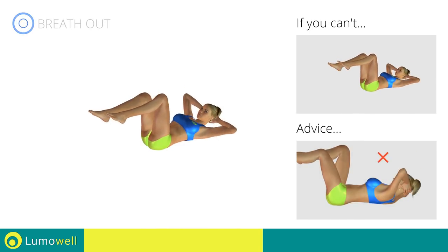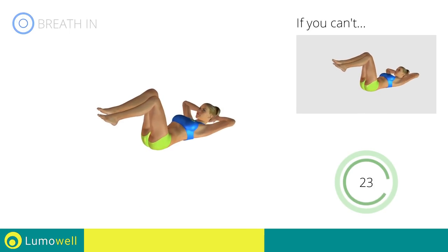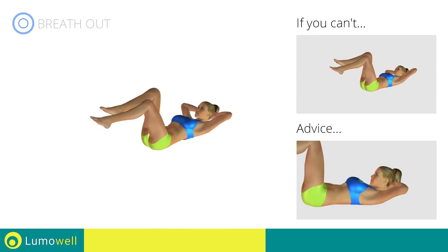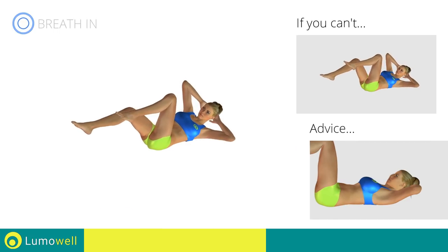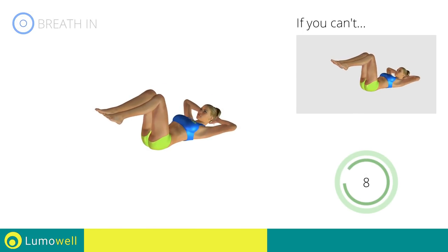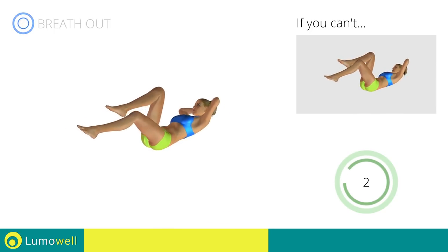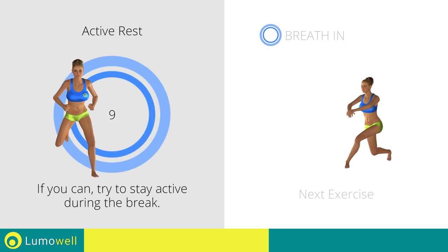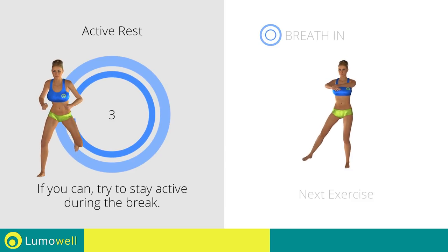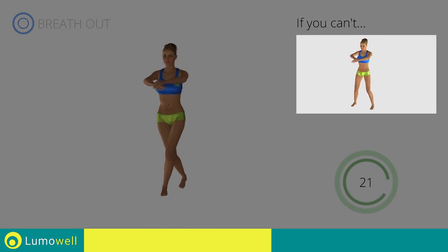Be sure not to lift your lower back off the floor — keep the abs constantly tight. Do not strain your neck; staring at a fixed point in front of you may help. If you are unable to complete this motion, try simple back cross lunges.